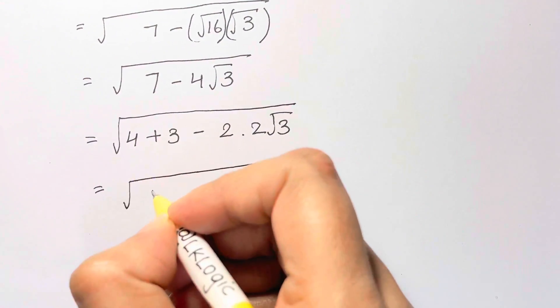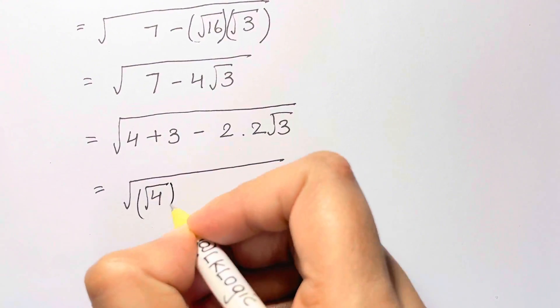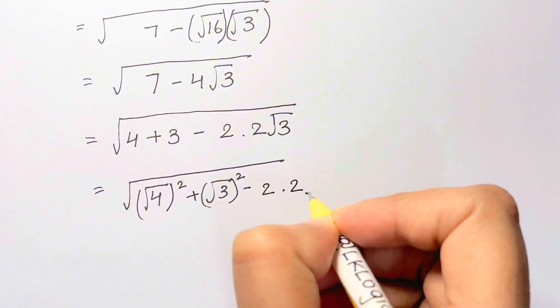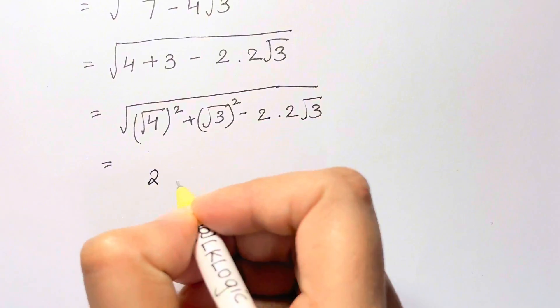Now this can be written as square root of 4 the whole square, which brings back 4, square root of 3 the whole square minus 2 times 2 root 3. Now square root of 4 is 2.